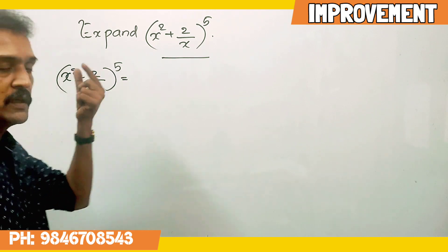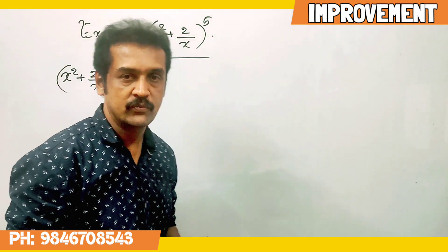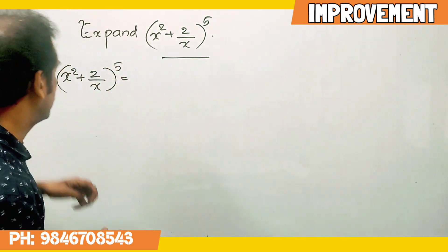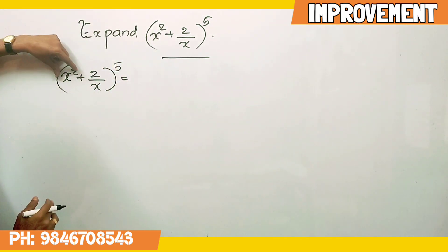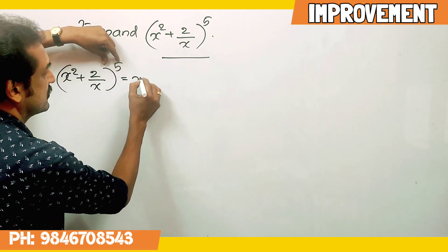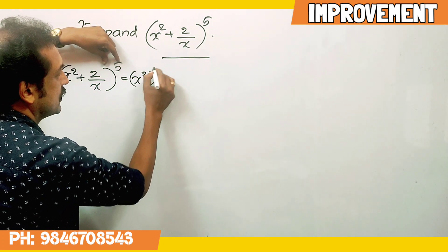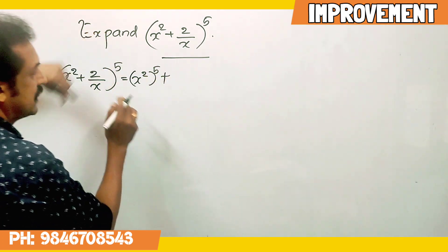This is in the format of a plus b whole raise to n. The first term is x squared raise to 5.